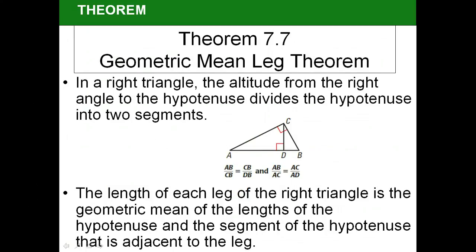The geometric mean leg theorem says that the length of each leg of the right triangle, so the length of CB, is going to be equal to the geometric mean of the length of the hypotenuse, this whole thing from A to B, and the segment of the hypotenuse that's adjacent to the leg, so the part that makes up the angle down here, so that will be DB. And we can get the other side too. AC will be equal to the geometric mean between the entire hypotenuse, AB, and the part of the segment that is next to it, AD.